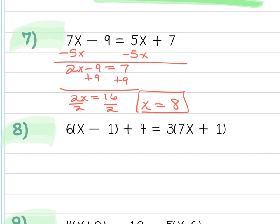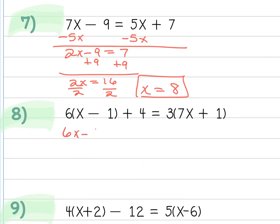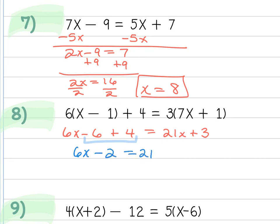The next one's a little different — I need to distribute first, then combine like terms, then begin moving things together. Distributing the 6 gives 6x - 6, drop down the +4, then distribute the 3. Now combining like terms first makes the problem simpler. I get 6x - 2 = 21x + 3. Now I'll move the 6x to the right, giving -2 = 15x + 3.